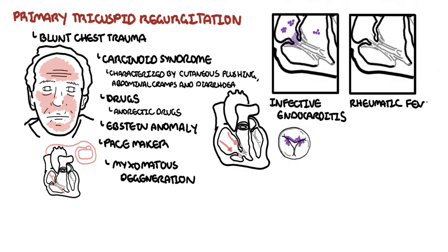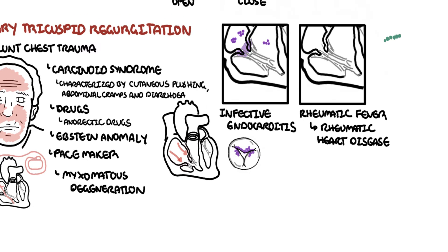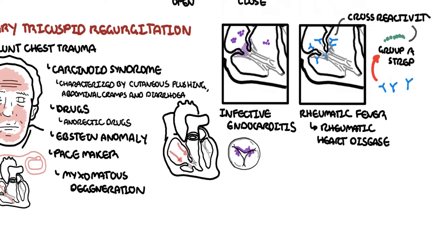Rheumatic fever is another important cause, which can lead to rheumatic heart disease. In rheumatic heart disease, Streptococcus pyogenes causes the initial acute infection, which creates antibodies that share molecular similarities to the heart valves, resulting in cross-reactivity and damage to the valves themselves. Marfan syndrome is another cause of primary tricuspid regurgitation.